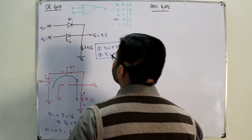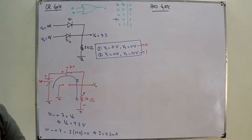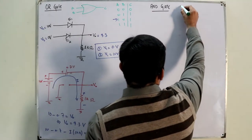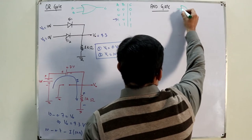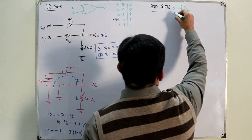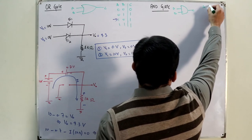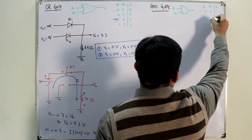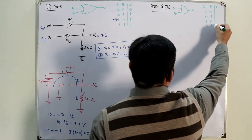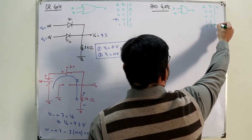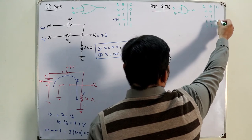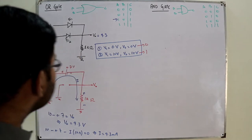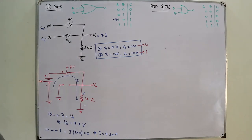The second topic is the AND gate. The AND gate symbol looks like this. Inputs A and B, output C. The truth table has four combinations: 0-0, 0-1, 1-0, 1-1. The output is high if and only if both inputs are high — which means the AND gate basically acts as a multiplier circuit.